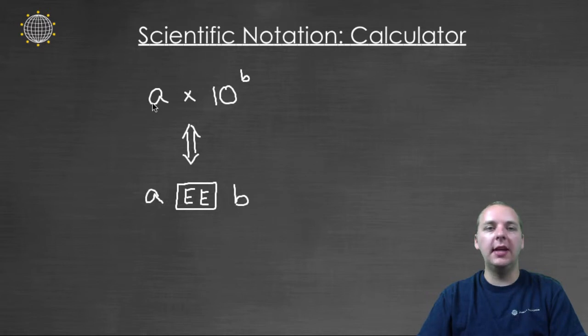If you have your normal notation A times ten to the B, then the way to type that in on a calculator is you're going to type whatever your number is A, and then there's a button which I'll show you in just a second that says EE, and that's basically short for times ten to the blank, and then type your B which is understood to be your exponent for ten.